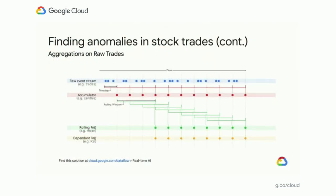To illustrate what Dataflow does to pre-process raw stock trades before they're used in training the anomaly detection model, as raw events representing trades enter the pipeline, we divide them into time windows represented by accumulators on this graph, and we calculate rolling window statistics on them — for example, the mean of these time windows, Kendall statistics, and the RSI index, which stands for Relative Strength Index and is an indicator of data movement.